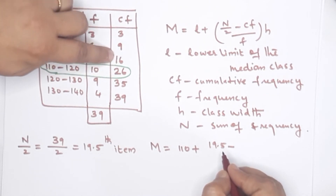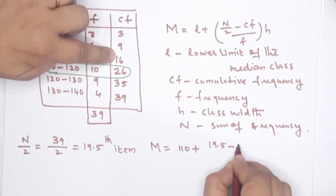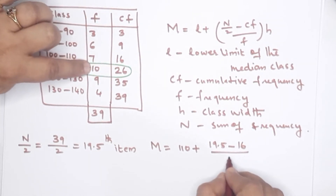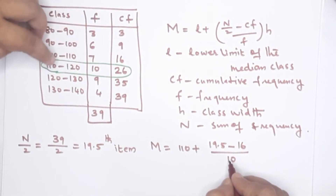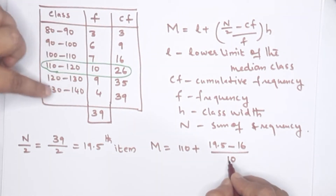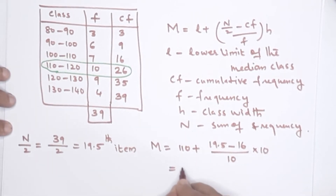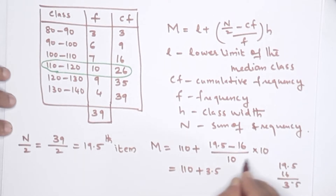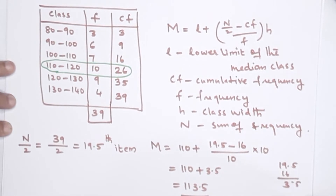CF is the cumulative frequency of the class preceding the median class. This is our class width. Then the median answer: 110 plus (19.5 minus 16) divided by 10, into 10 — that gives 3.5. So the median is 113.5. Clear, all right.